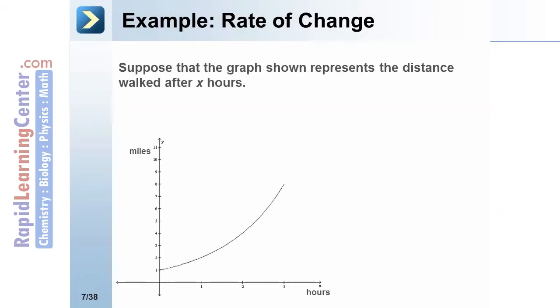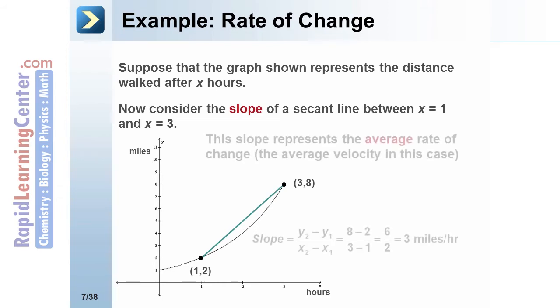Here is an example of a rate of change. This graph below represents the distance walked after x hours. Now let's consider the slope of a secant line that's drawn through the two points (1,2) and (3,8). This slope would represent the average rate of change. In this case it would be average velocity since the change in y would be miles and the change in x would be hours. If we take those two ordered pairs and plug them into our formula for slope, we're going to get 6 divided by 2, or 3 miles per hour.